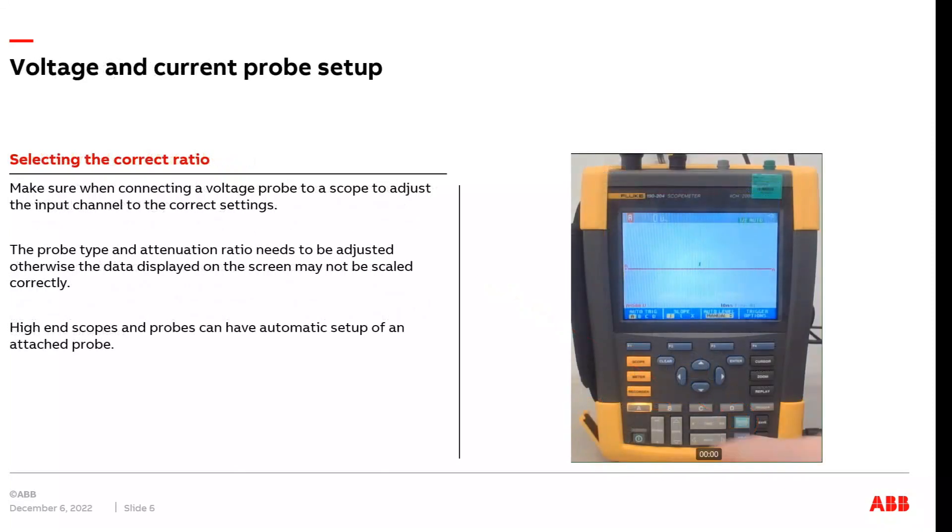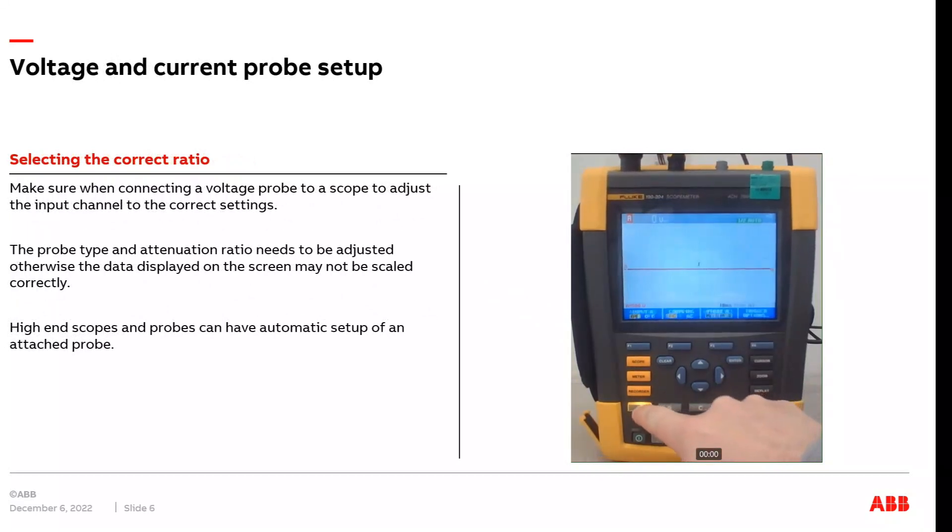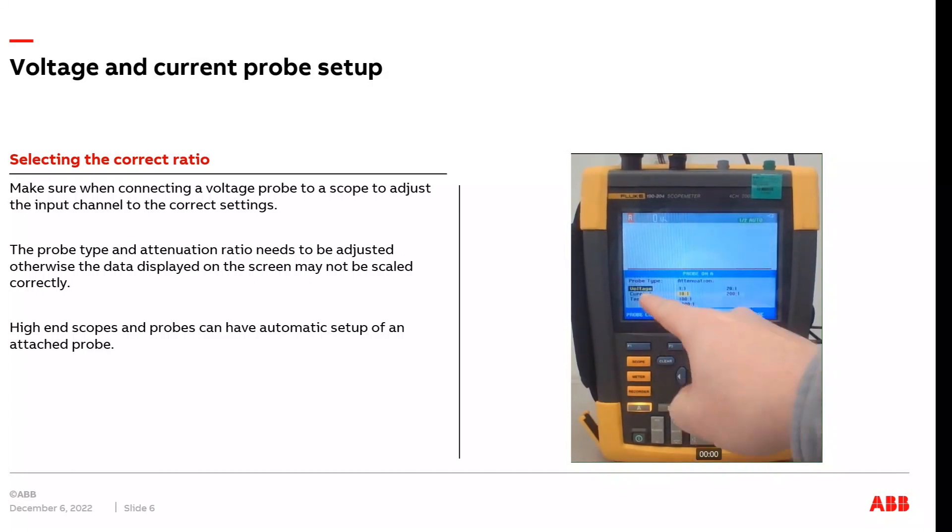It is important that we make sure we set up the input channels correctly to either the voltage or current probe connected to each individual channel. In the video on the right, I'm setting up channel A for a voltage probe, a 10 to 1 ratio. On channel B, I'll be setting that up for a current probe. It's very important that these channels are set correctly, otherwise the magnitude of the signal being measured will not be properly displayed on the screen.